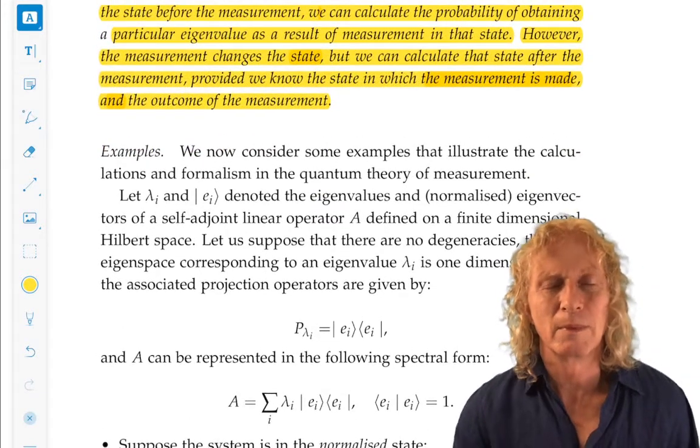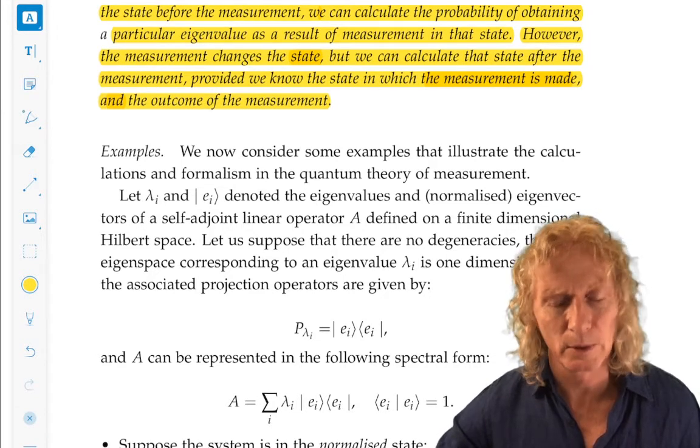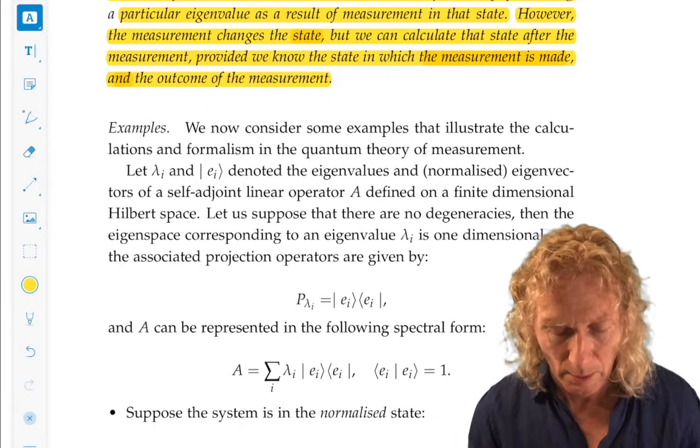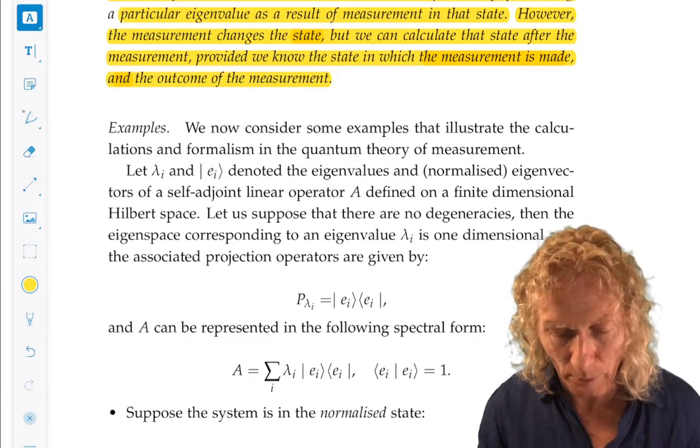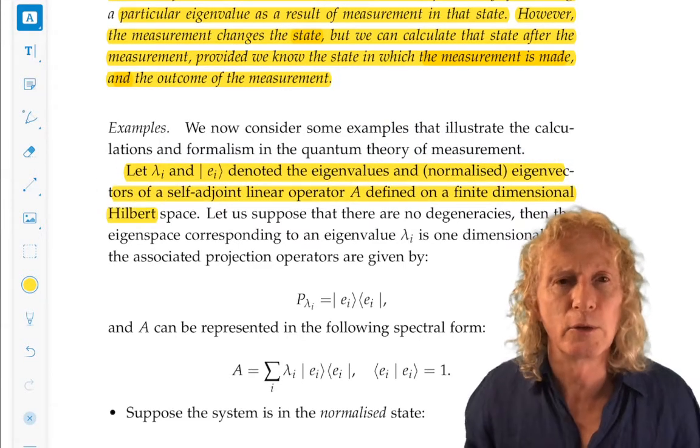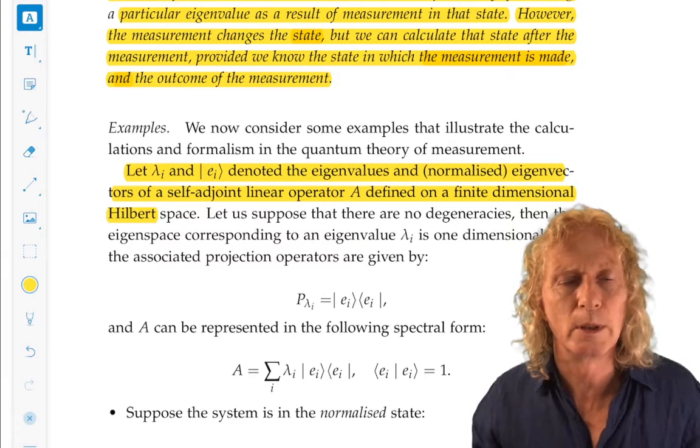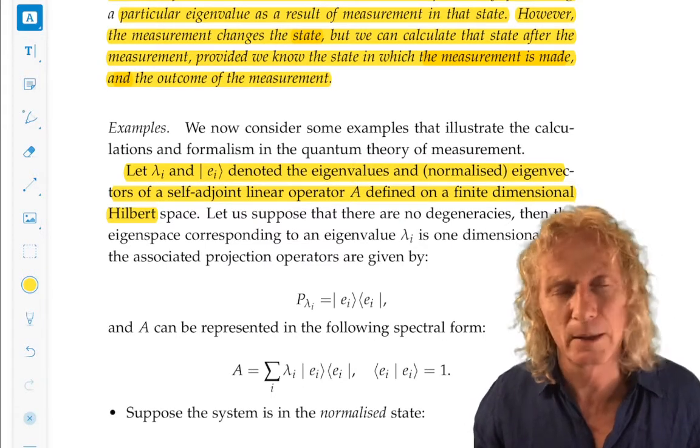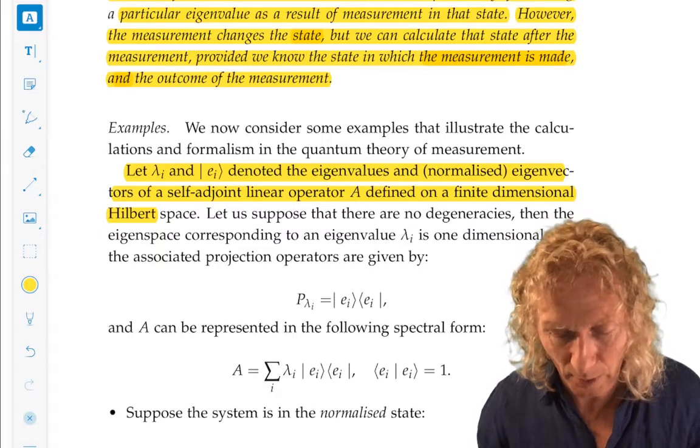I want to consider two examples. I'll consider one in this lecture and then I'll come back in the next lecture and consider a different example which has a few different wrinkles. Let lambda_i and ket e_i denote eigenvalues and normalized eigenvectors of a self-adjoint operator A defined on a finite dimensional Hilbert space. That's the setup. Now, we're going to suppose there are no degeneracies. Corresponding to each eigenvalue, we have one eigenvector.